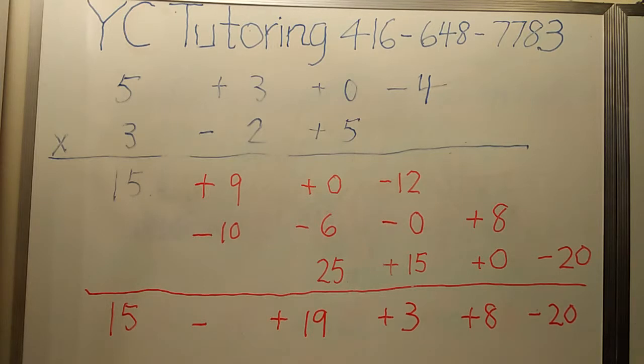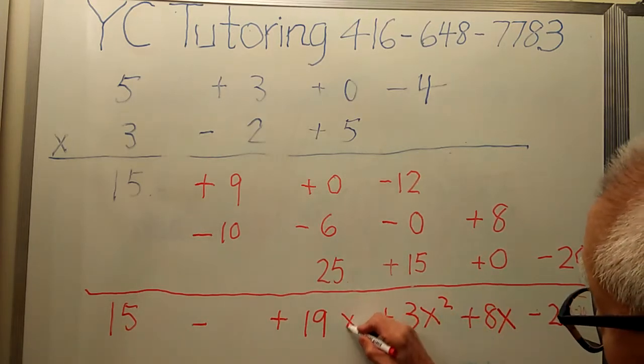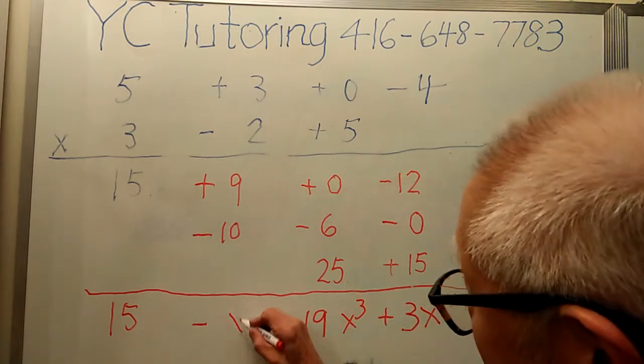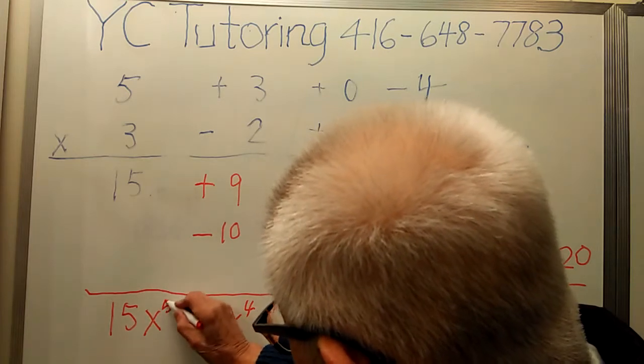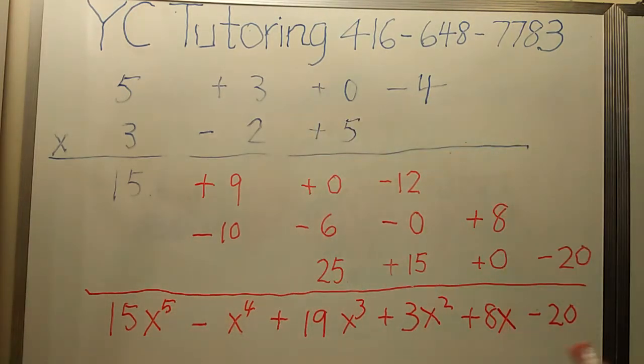But what is my final result? The final result of course contains x. But when I do this, I erase all the x's. Now I need to put the x back. This is x to the power 0, so this is x to the power 1. I put x back. So 1, 2, 3, 4, 5. And this is my final answer.